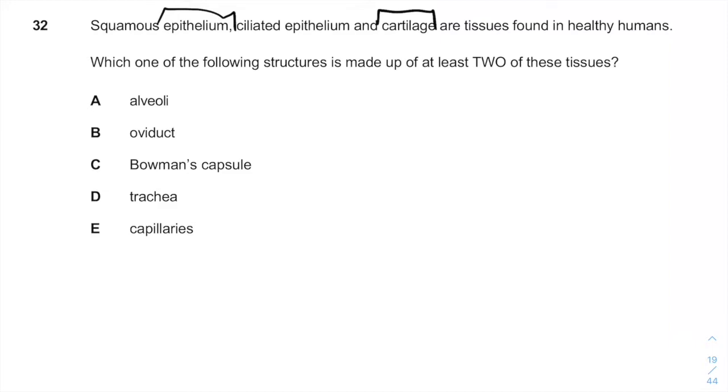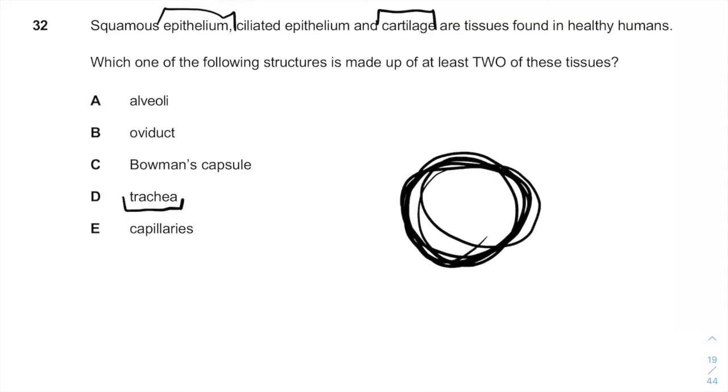So you can solve it using logic kind of easily. As you see, the trachea, which is the air pipe, the windpipe, is a hard structure made of cartilage which is also lined with epithelial tissues.